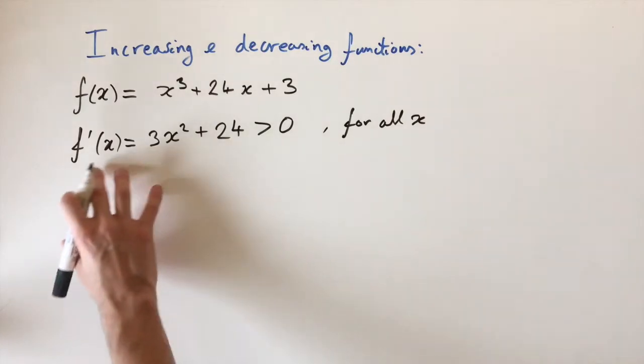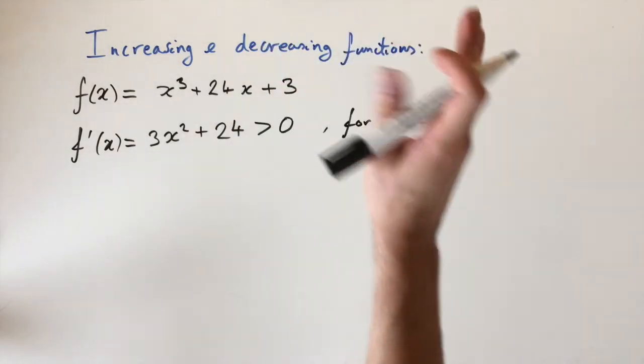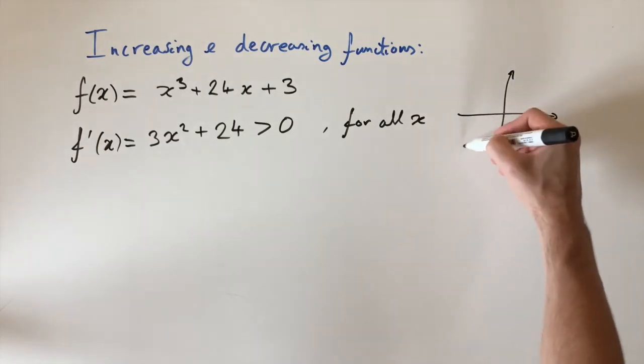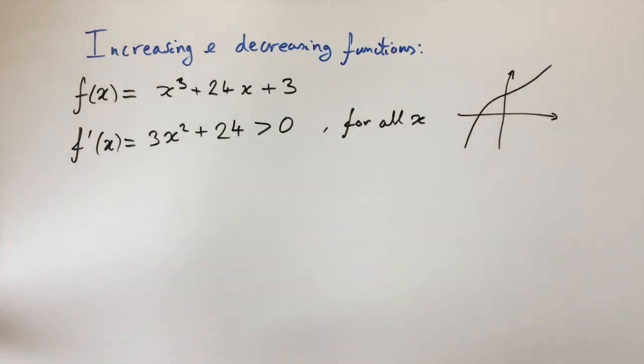So I'll just write for all x in the real line. Now if you remember from before, this tells us that this function is always increasing. So I could draw a very rough sketch here. I've got no idea what it looks like, but maybe something like that. So it's always tending upwards.